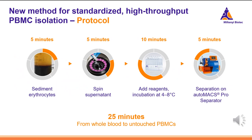Let's take a quick look at the protocol for the new method. We first sediment the red blood cells in a short centrifugation step, then wash the supernatant with a quick spin and add the reagents. The incubation can be done on the instrument, followed by a short run on the Automax Pro. Depending on the volume of your sample, this can be as short as 5 minutes, meaning you go from your whole blood sample to PBMCs in just 25 minutes.